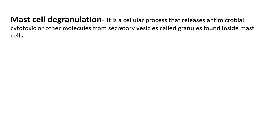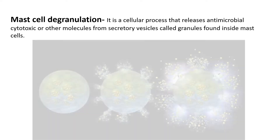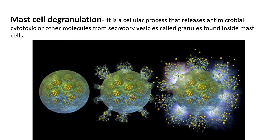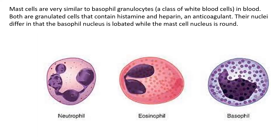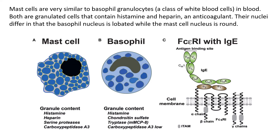The answer is mast cell degranulation. It is a cellular process that releases antimicrobial, cytotoxic, or other molecules from secretory vesicles called granules found inside mast cells. Mast cells are very similar to basophil granulocytes, which are white blood cells found in blood. Both are granulated and contain histamine and heparin, although heparin is found less in basophils.